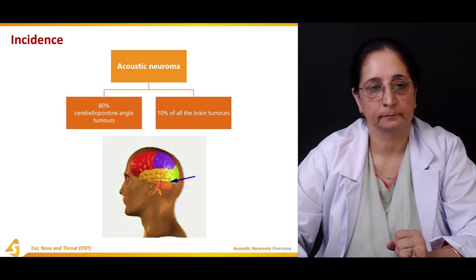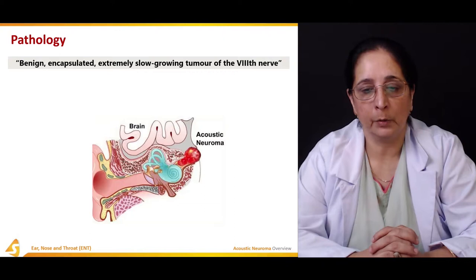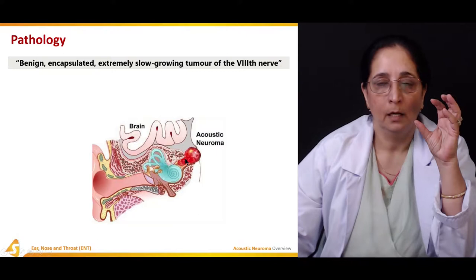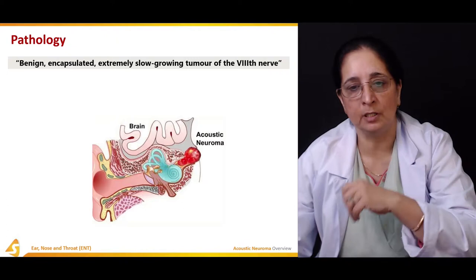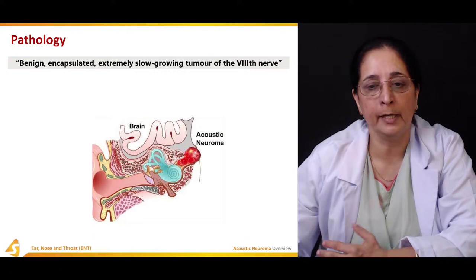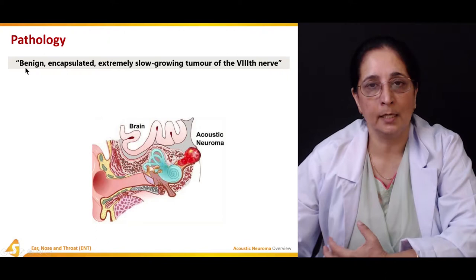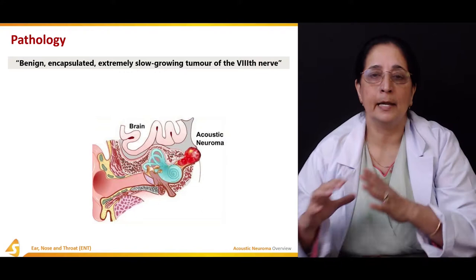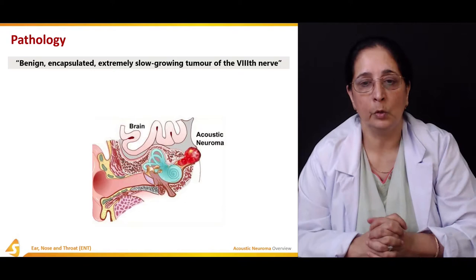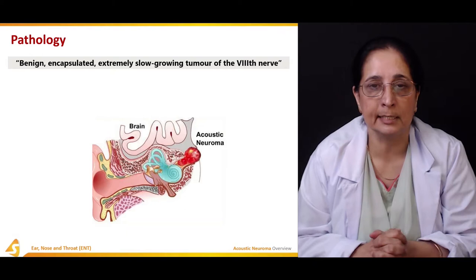The pathology of acoustic neuroma: as seen in the diagram, they appear as localized, encapsulated, benign lesions that grow very slowly. They are not fast or rapid-growing tumors. Being benign, they do not metastasize to distant areas. They are encapsulated and are a very slow-growing tumor of the eighth cranial nerve, the vestibulocochlear nerve.